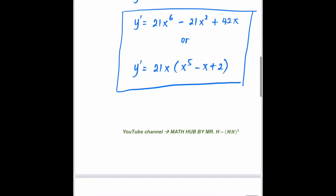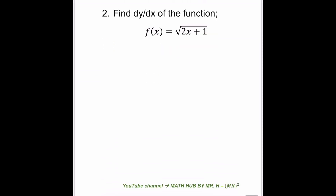For example number two, find dy/dx of the function f(x) equals the square root of 2x plus 1. The given function is in radical form, but technically this function is also equal to, if you rewrite it in exponential form, it's going to be (2x plus 1) to the power of 1/2. You need to rewrite the given function first and then proceed with finding the derivative.